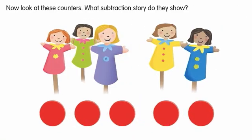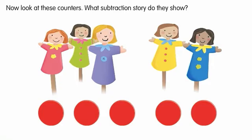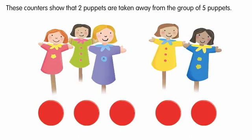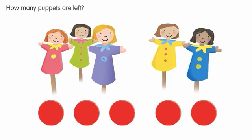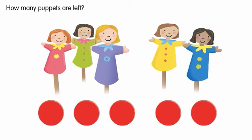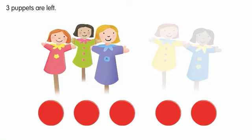Now, look at these counters. What subtraction story do they show? These counters show that two puppets are taken away from the group of five puppets. How many puppets are left? Three puppets are left.